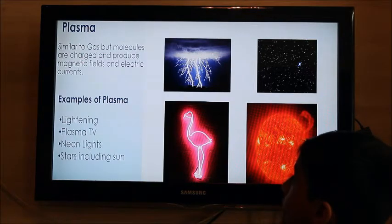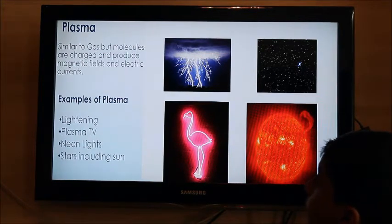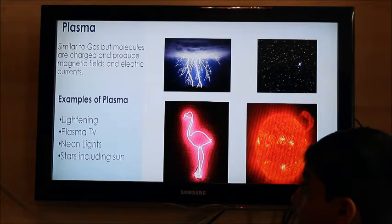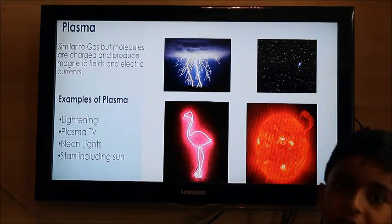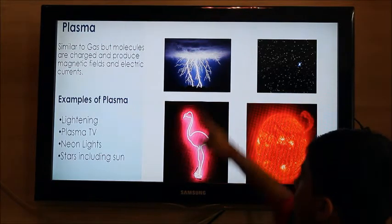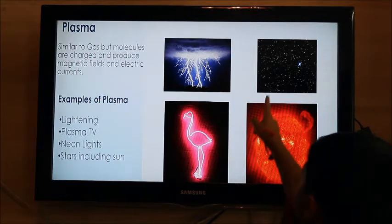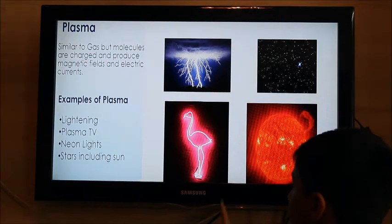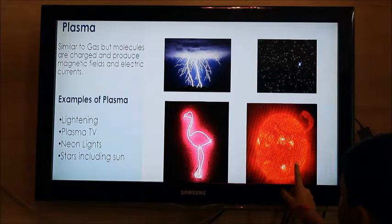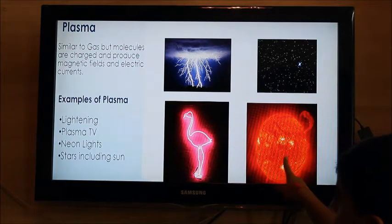Plasma: similar to gas but molecules are charged and produce magnetic fields and electric currents. Examples of plasma: lightning, stars, neon lights, and sun. Stars and auroras.